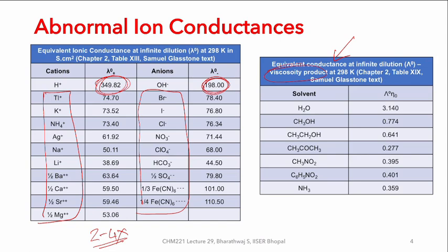H₂O has a very high product of viscosity to equivalent conductance of about 3 units, while the others are between 0.5 to 0.75 units. This indicates that H⁺ and OH⁻ potentially have quite a number of differences that result in their migrations being different in comparison to the other anions and cations that are present.